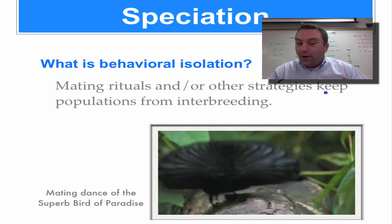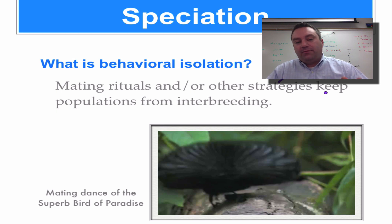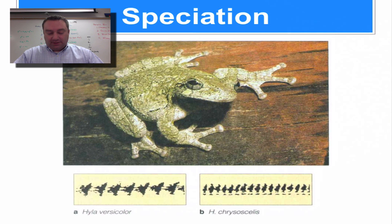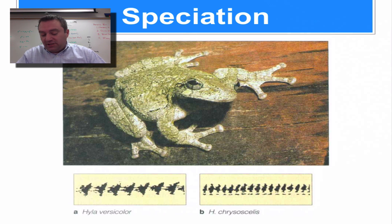After watching the clip, you can see it's quite an elaborate dance — not unusual for birds. Moving on, we have a common tree frog found in North America with two very similar species. To a normal person, you can't look at species A and species B and tell the difference between them — it comes down to their mating ritual.